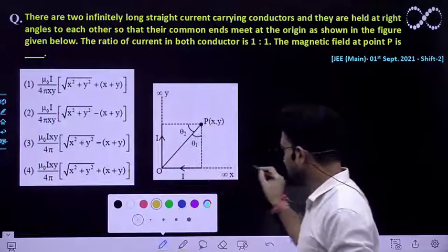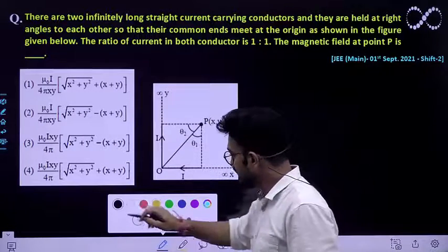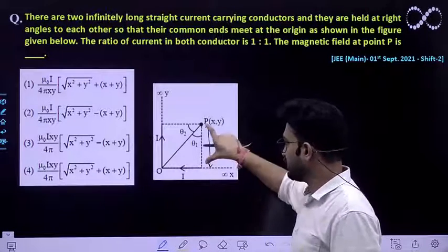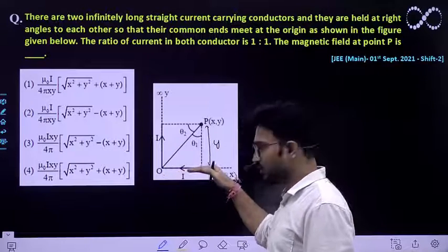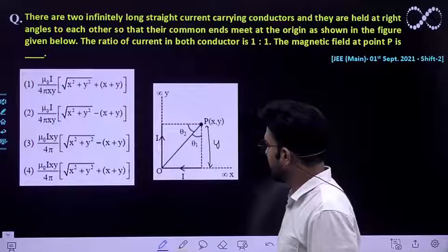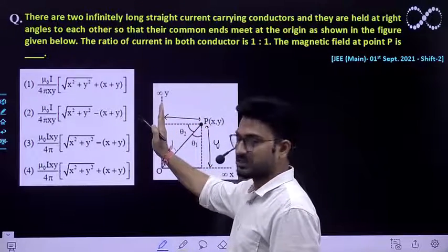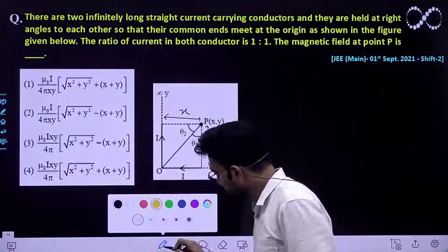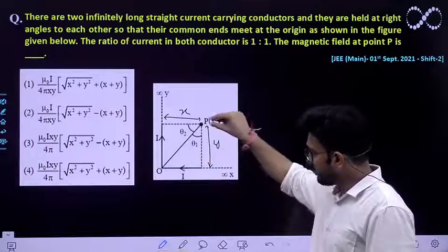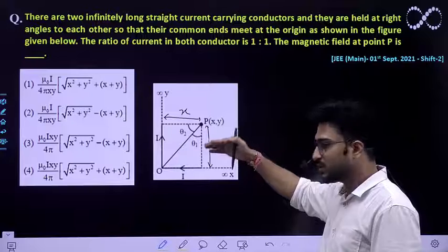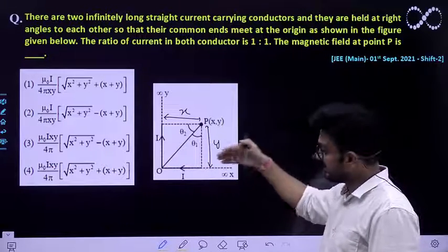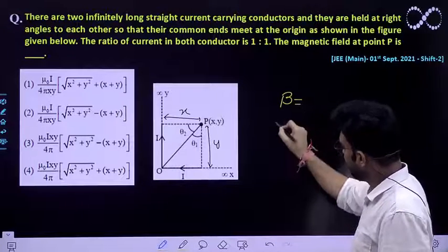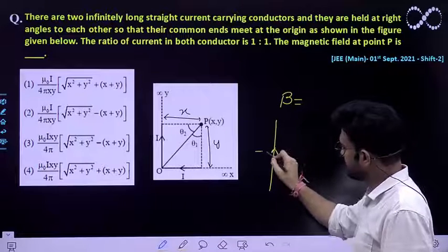First of all, these are infinitely long current-carrying conductors. The perpendicular distance from the lower most infinitely long current-carrying conductor to point P is Y meters, and the perpendicular distance from the other current-carrying conductor is X. Now we will write the expression for the magnetic field at a perpendicular distance because of the infinitely long current-carrying conductors.